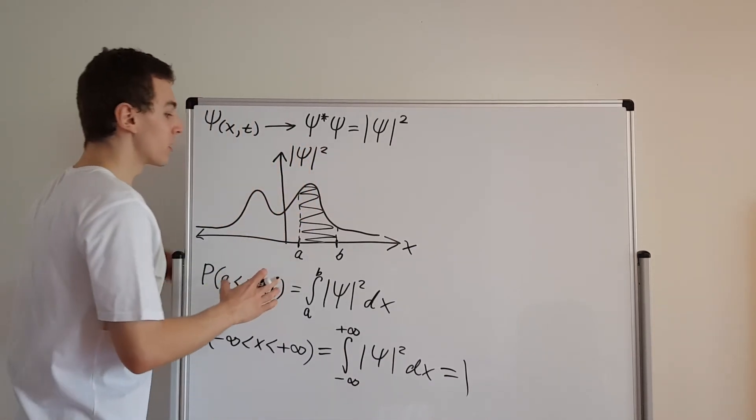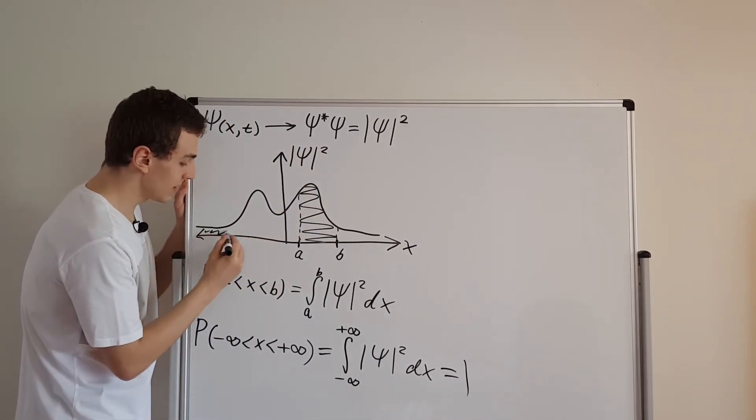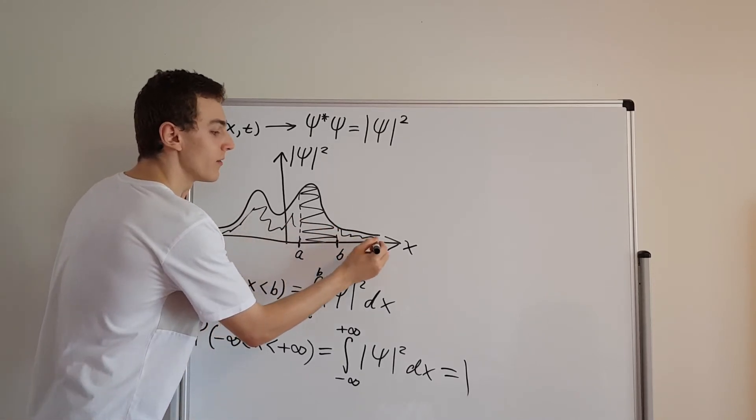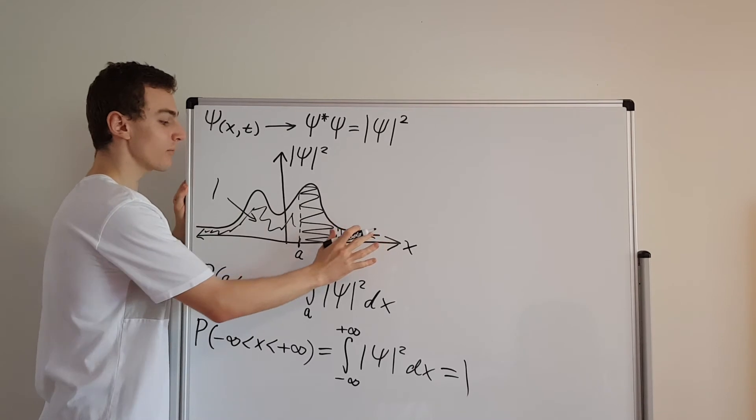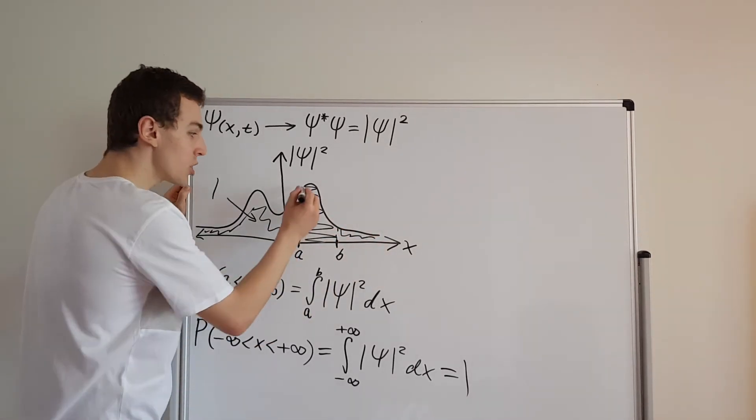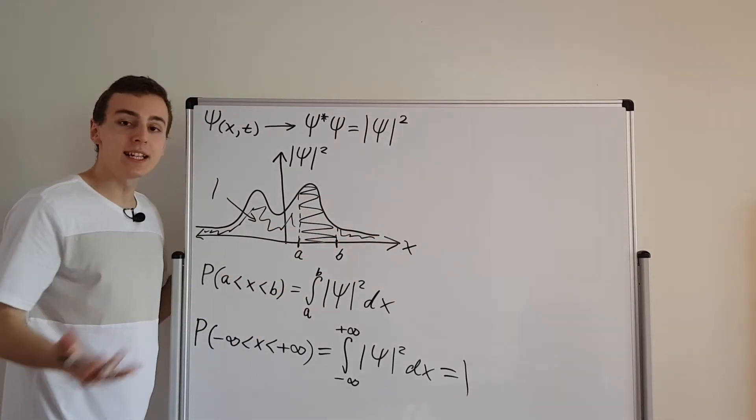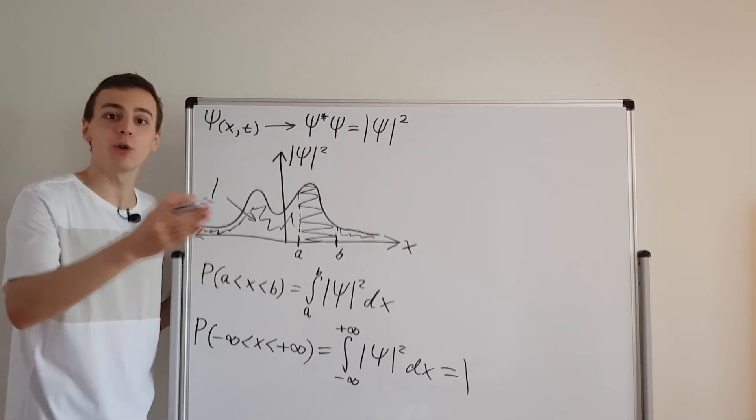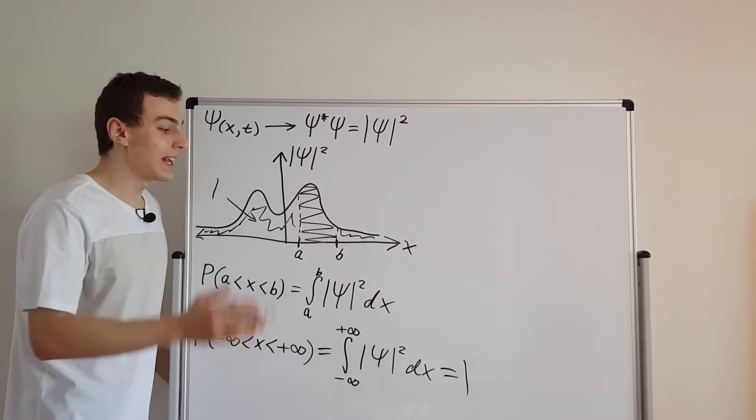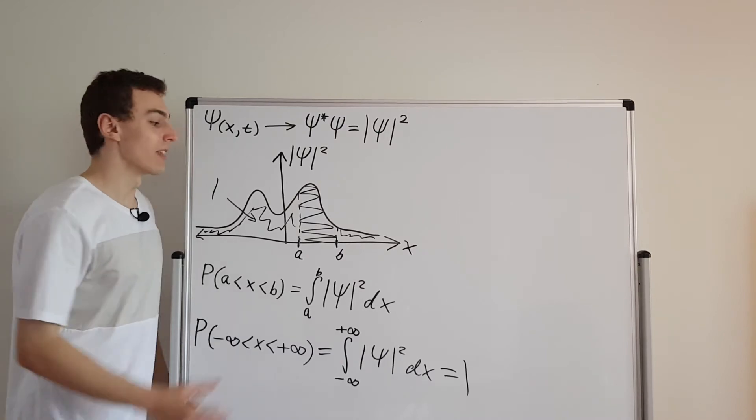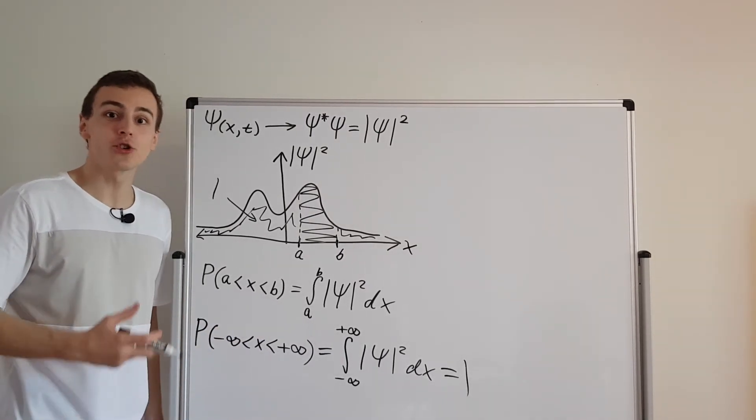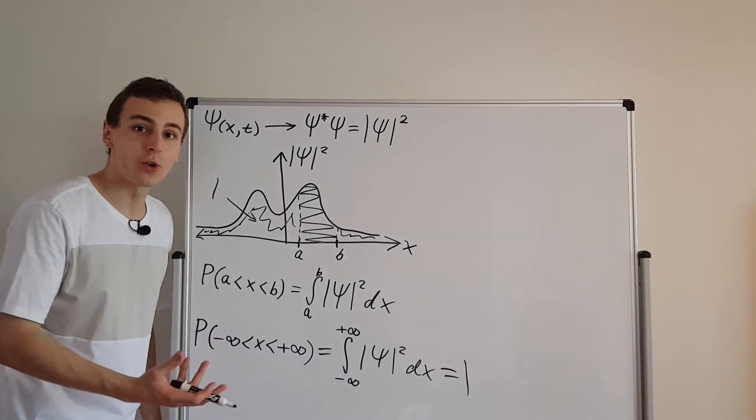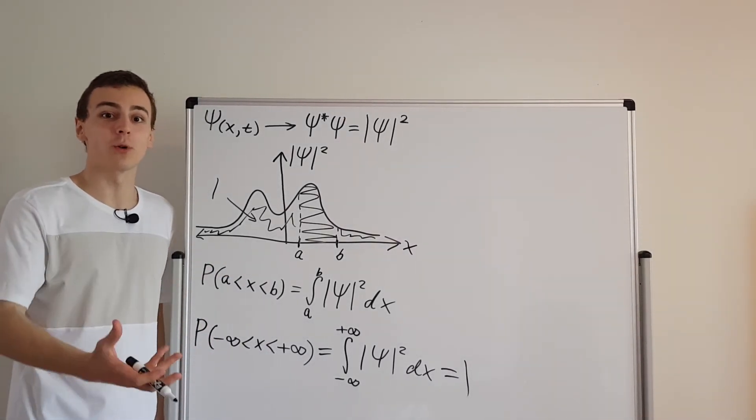This ensures that the entire area, all of this area over here, all of this is equal to one. So the area under the curve is one. That means that a portion of this area is going to be less than one. It's going to be somewhere between zero and one. It's going to be a non-negative real number, and that is what a probability has to be. So normalization ensures that we can have a useful statistical interpretation of quantum mechanics.